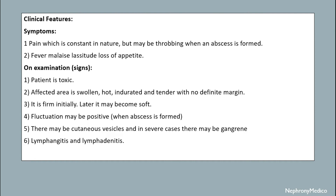The clinical features include pain, which is constant in nature, but if an abscess has formed the pain becomes throbbing. There is fever, malaise, lassitude, and loss of appetite. On examination, the patient is toxic; the affected area is swollen, hot, indurated, and tender with no definite margin. It is firm initially and later may become soft, with positive fluctuation once an abscess forms. There may be cutaneous vesicles, and in severe cases gangrene, lymphangitis, and lymphadenitis can be seen.